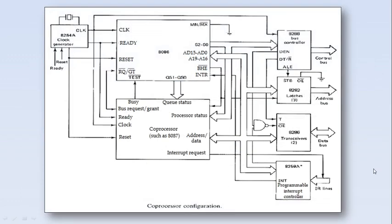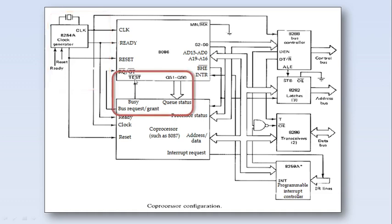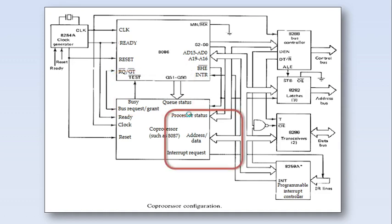This shows a typical coprocessor configuration wherein the clock is shared by the 8086 and the coprocessor. We have taken the 8087 numeric coprocessor connected to the 8086. It shares the clock and also the TEST signal, which is asserted whenever the coprocessor is used. It also monitors the queue status, and the address and data lines are shared by the coprocessor along with the 8086.